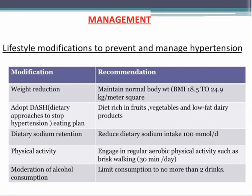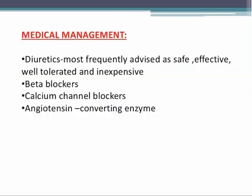Coming to the management, the first and foremost approach for hypertension is lifestyle modification. Weight reduction is advised — patients should maintain a normal body weight with a BMI between 18.5 and 24.9 kg/m². Patients are also advised to adopt the DASH eating plan — Dietary Approaches to Stop Hypertension — which includes a diet rich in fruits, vegetables, and low-fat dairy products. Dietary sodium intake should be less than 100 millimoles per deciliter, and patients should engage in regular aerobic physical activity such as brisk walking, along with moderation of alcohol consumption to no more than two drinks.